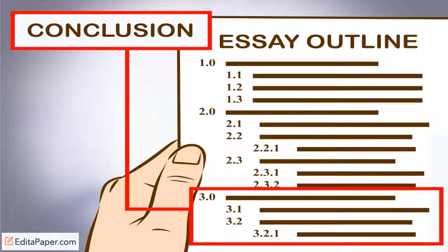The alphanumeric format uses Roman numerals 1, 2, 3, 4, etc., capital letters A, B, C, D, etc., Arabic numerals 1, 2, 3, 4, etc., and lowercase letters a, b, c, d, etc. This one is more common than the other.